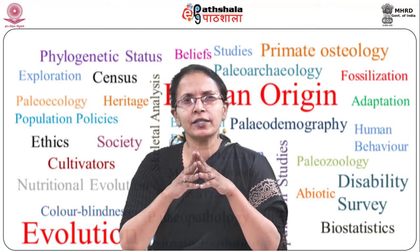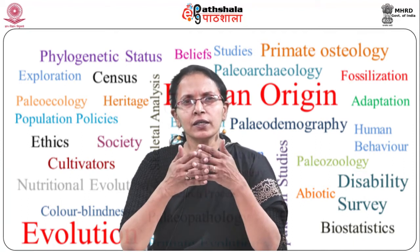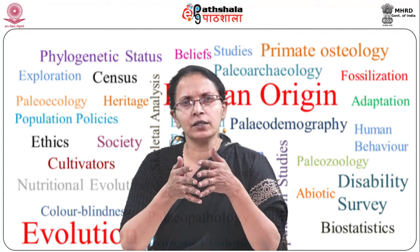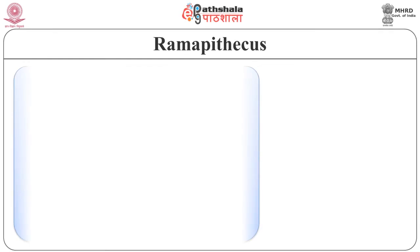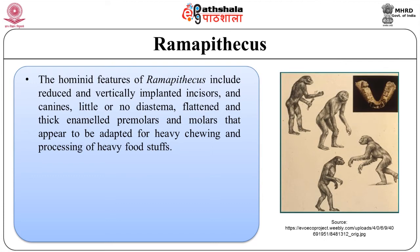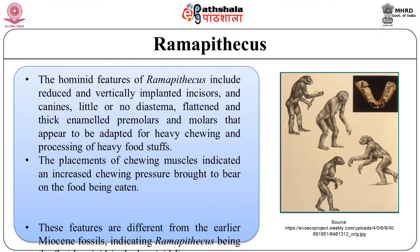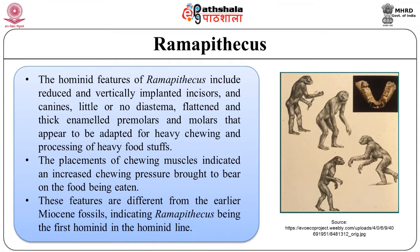The ecological setting of Fort Ternan and the Siwalik Hills fossils is that of a forest woodland environment, while the Greek fossil, being younger, is that of a drier savanna-like environment. The hominid features of Ramapithecus include reduced and vertically implanted incisors and canines, little or no diastema, and flattened, thick-enameled premolars and molars that appear to be adapted for heavy chewing and processing of hard food. Moreover, the placement of chewing muscles indicated an increased chewing pressure.